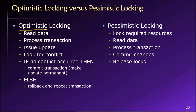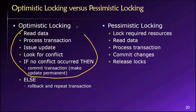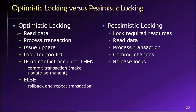Our assumption is that a conflict will not occur. If a conflict does not occur, this is very efficient — we're just doing these steps with no locking involved: read, process, update. You don't have to lock and unlock resources, and other people that may need to read the same data at the same time will be allowed to, because the data aren't locked.